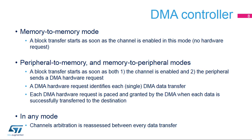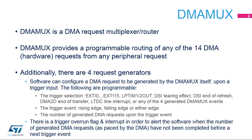A DMA hardware request identifies a single DMA data transfer. Each DMA hardware request is paced and granted by the DMA when each data is successfully transferred to the destination. In any mode, channel arbitration is reassessed between every data transfer. DMA MUX is a programmable multiplexer router of DMA requests. The mapping of DMA requests from any peripheral to DMA channels is programmable via independent DMA MUX channels. Additionally, up to four DMA requests may be internally generated by the DMA MUX following an input trigger signal.